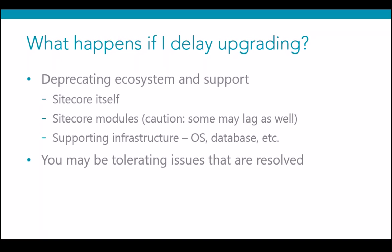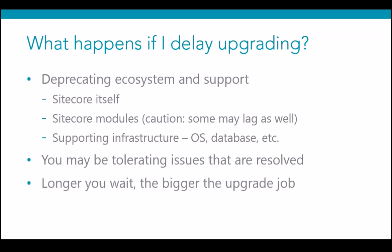You may also be tolerating issues that are already resolved — Sitecore issues numerous fixes with each release and also releases specific patches. The longer you wait, the bigger the jump: a perfect example is the search API change in version 7. If you're on version 6 with a Lucene-based search solution using the version 6 API, you'll have to revisit that moving to versions 7 or 8. You can do it incrementally or big bang, but incremental is likely less painful. And you might be missing full ROI on your license.